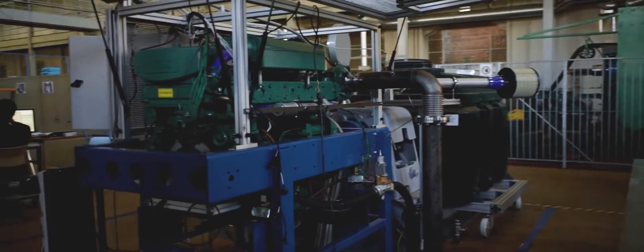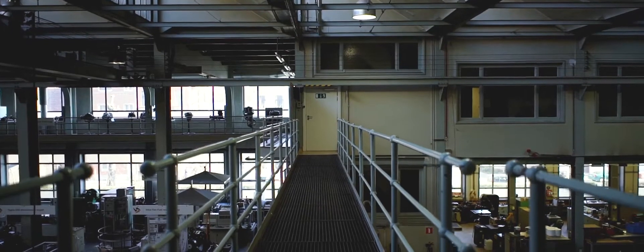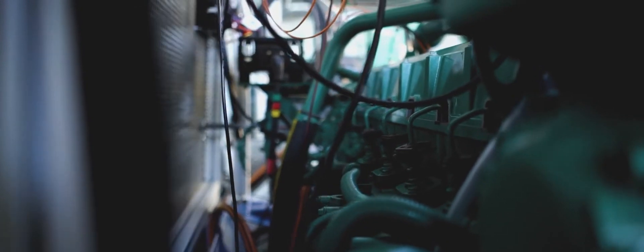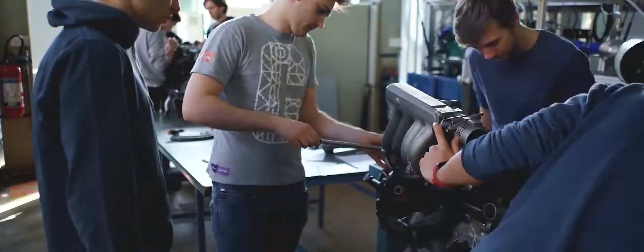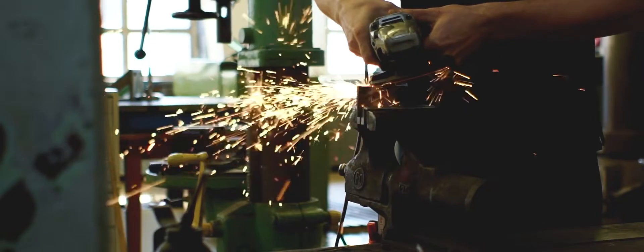At Ghent University, a Volvo Penta D7 has been converted to dual fuel operation. Power output and emissions will be measured both from dual fuel operation and diesel-only operation. In this way, Lean Ships will be able to draw very concrete conclusions on the advantages of this promising technology.